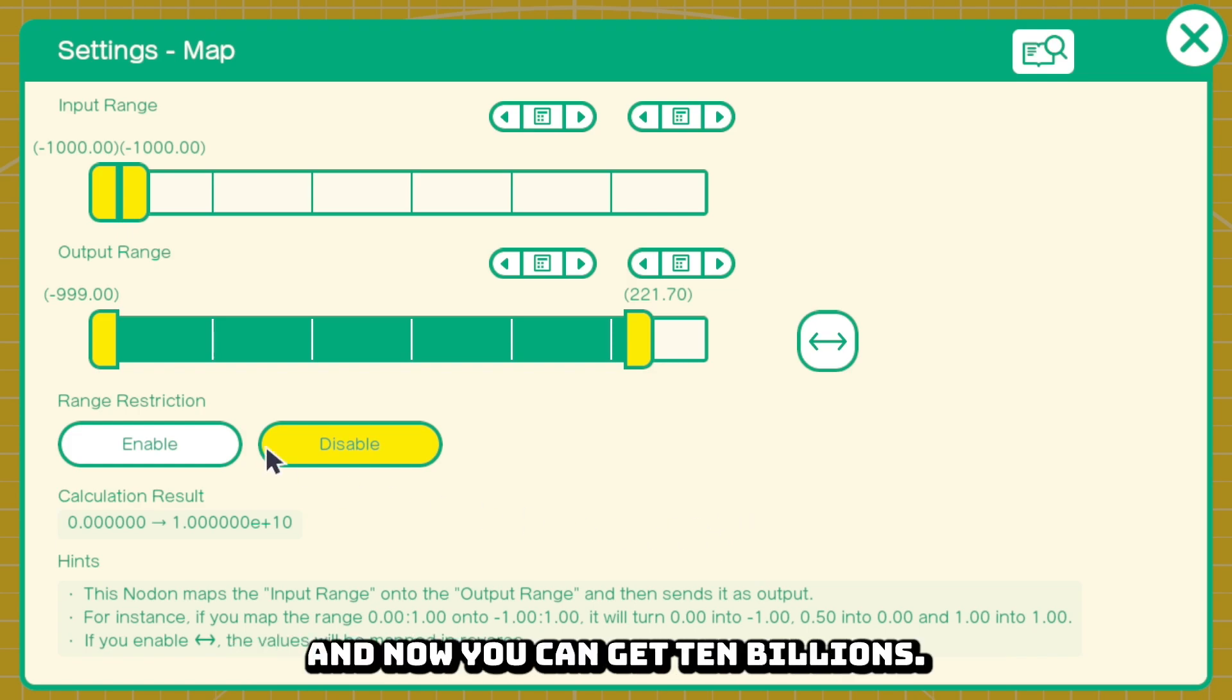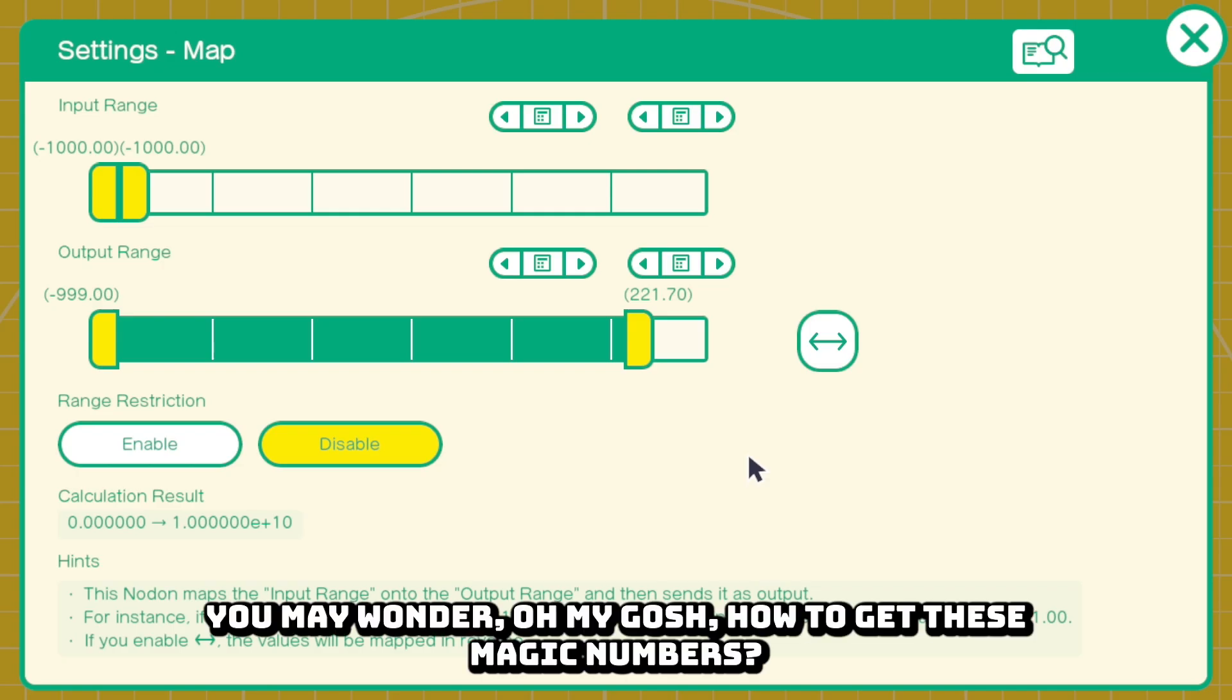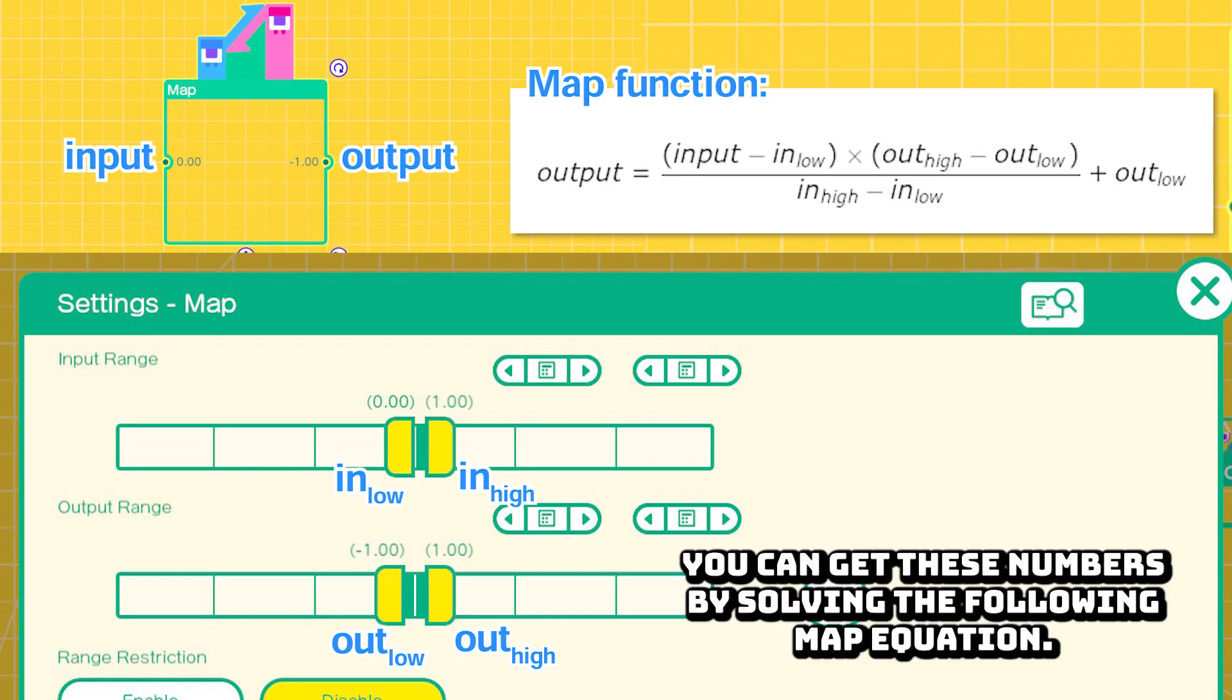You may wonder, oh my gosh, how to get these magic numbers? You can get these numbers by solving the following map equation.